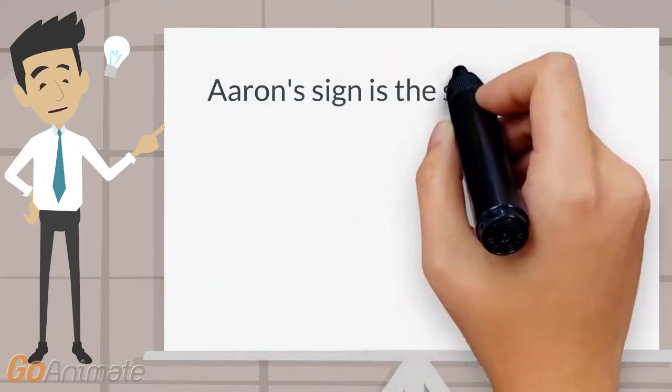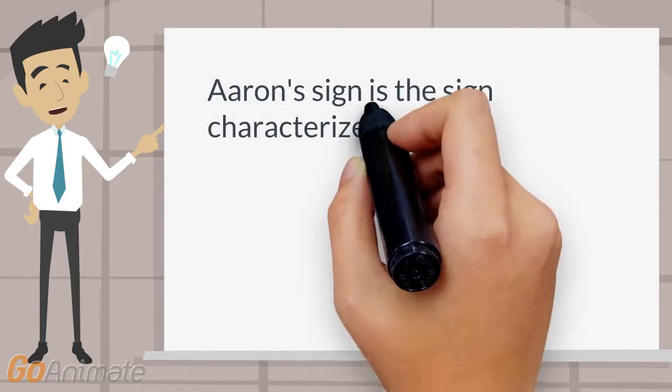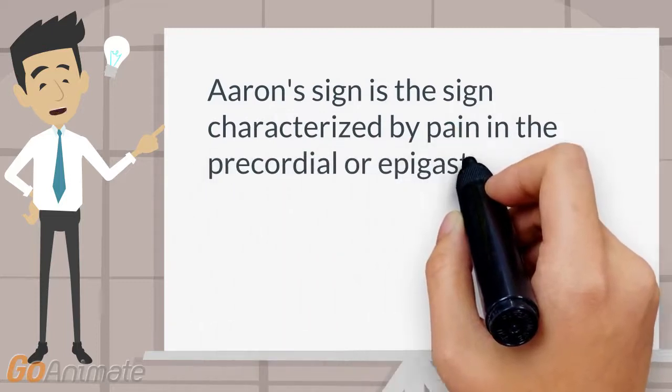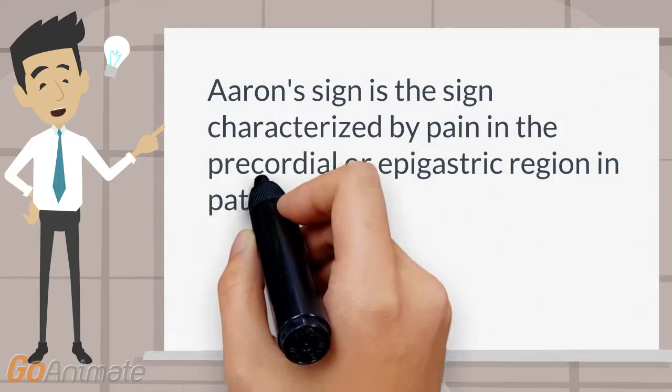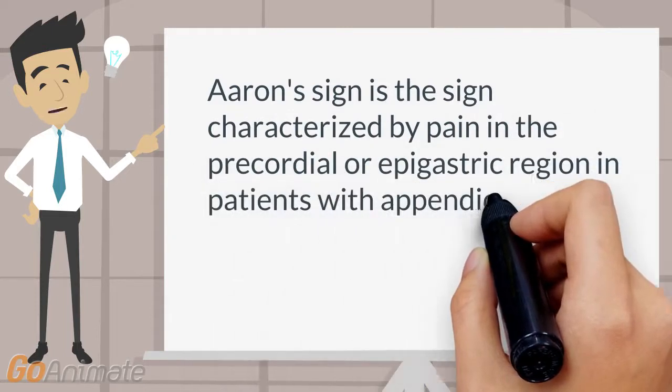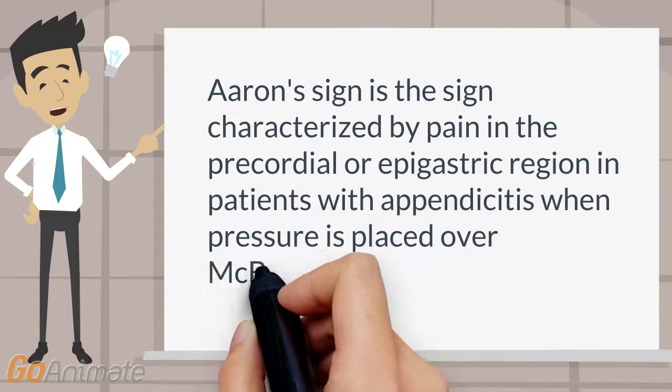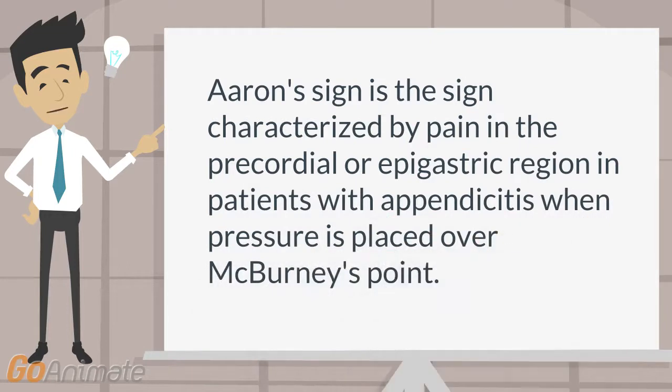Aaron's sign is the sign characterized by pain in the precordial or epigastric region in patients with appendicitis when pressure is placed over McBurney's point.